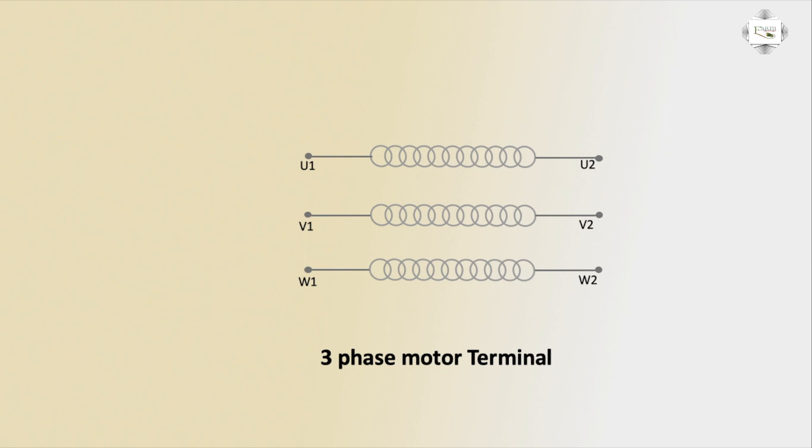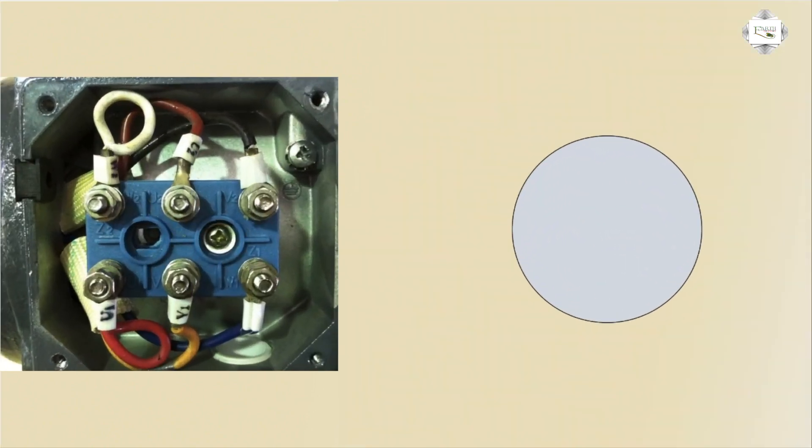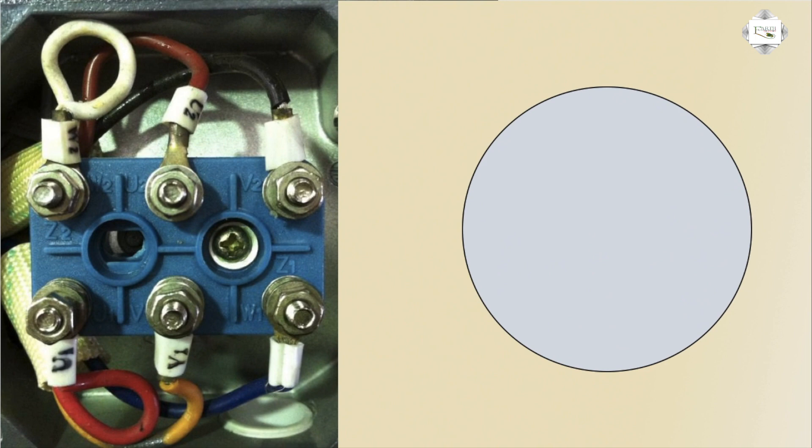Now I show Star-Delta connection. This is line 1, line 2, line 3. We have three-phase supply: red, yellow, and blue. Serially we connected line 1, line 2, and line 3. And this is a 3-phase motor. Now I see the 6 terminals: U1, V1, W1, and opposite terminals are W2, U2, and V2.